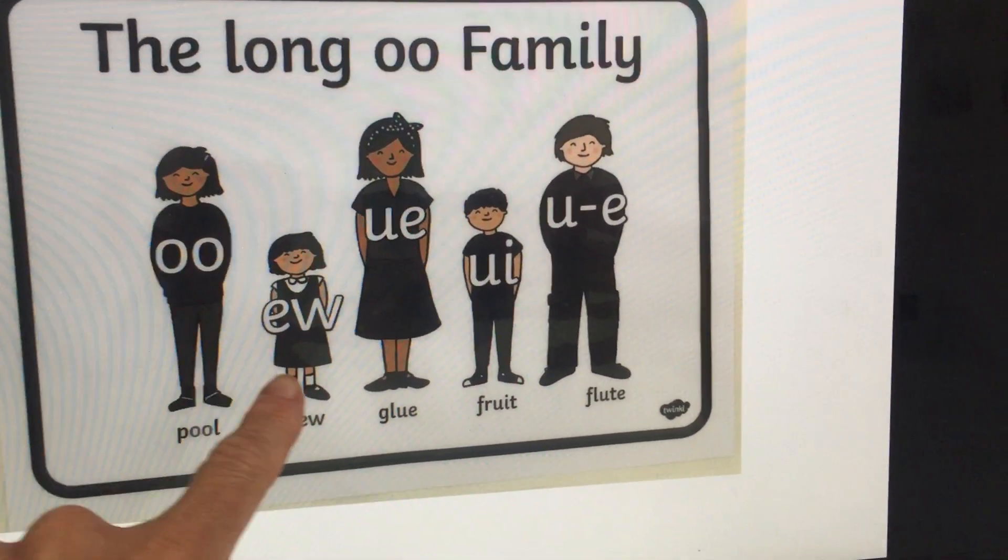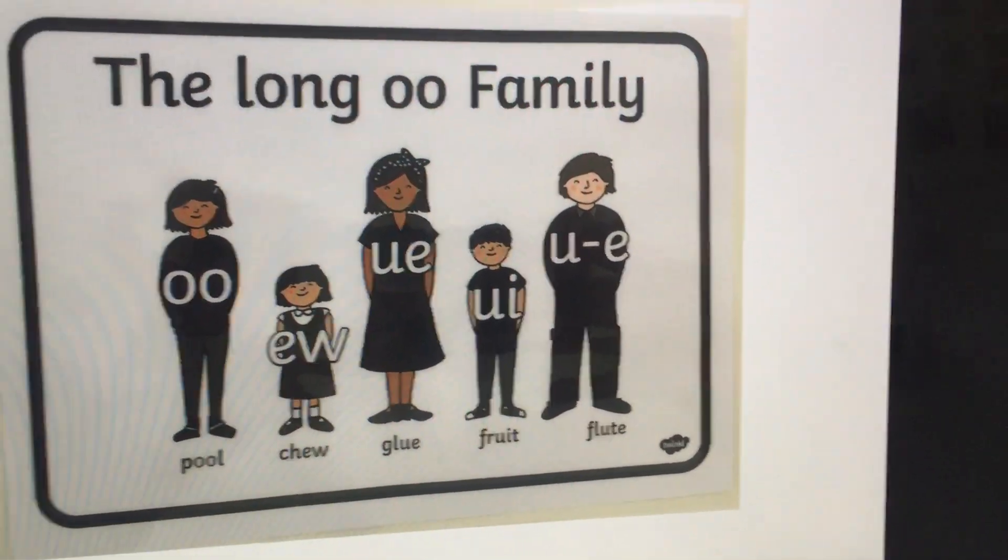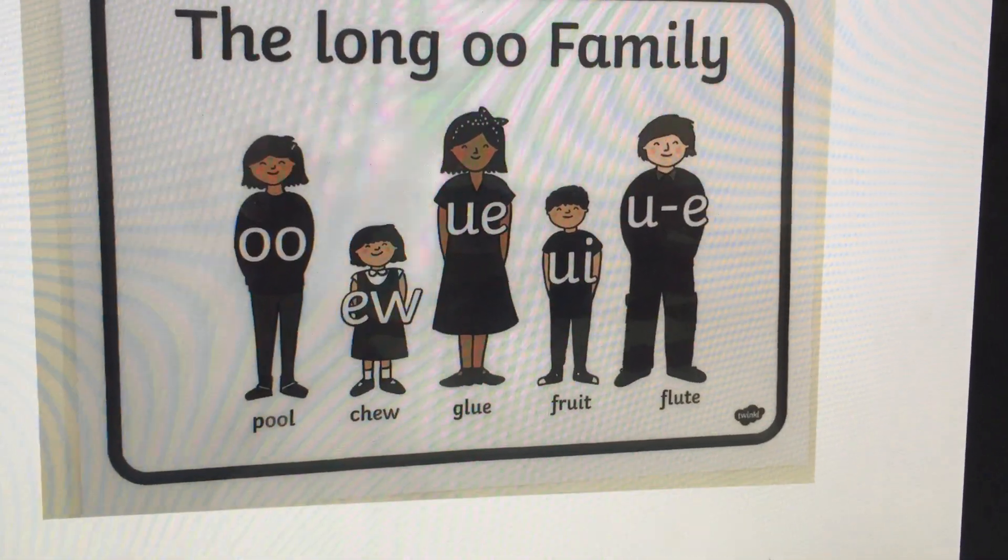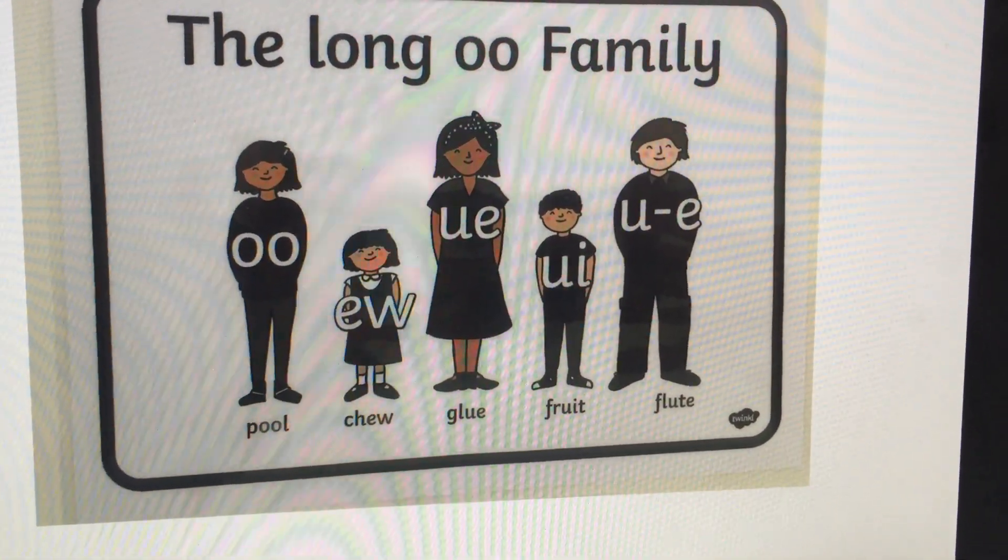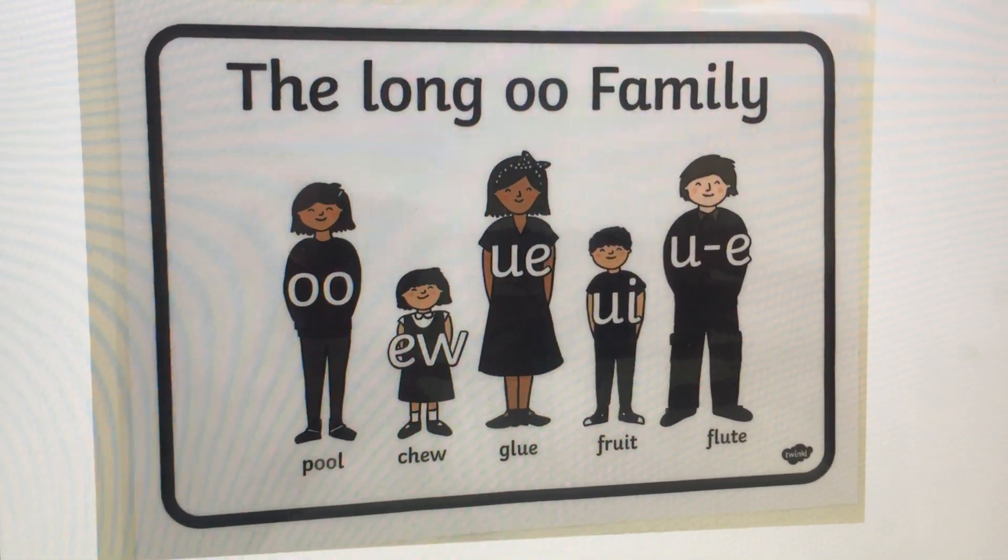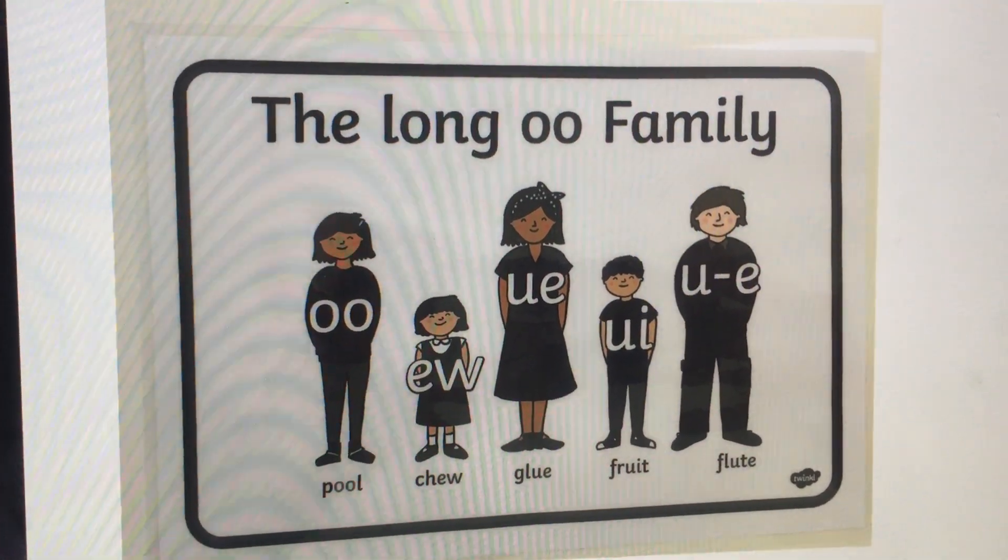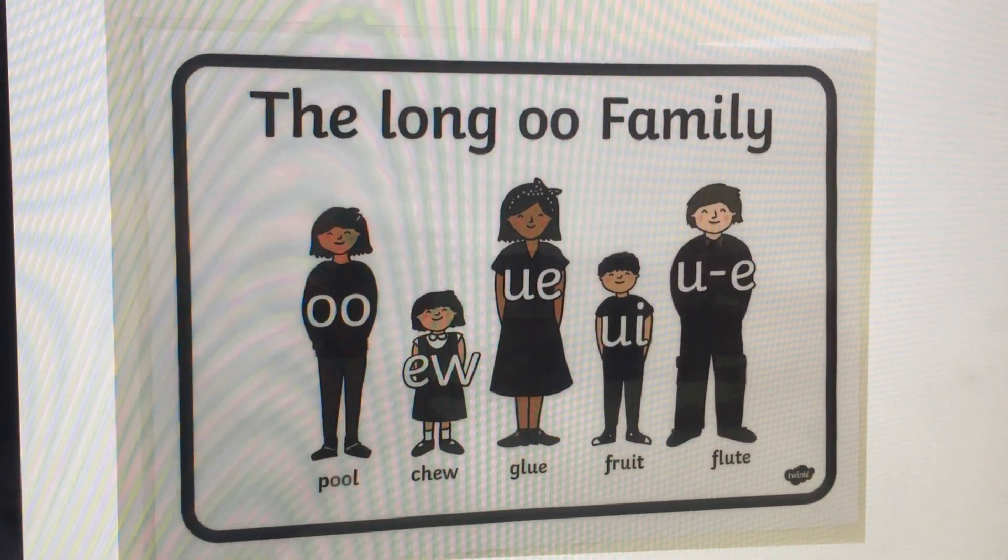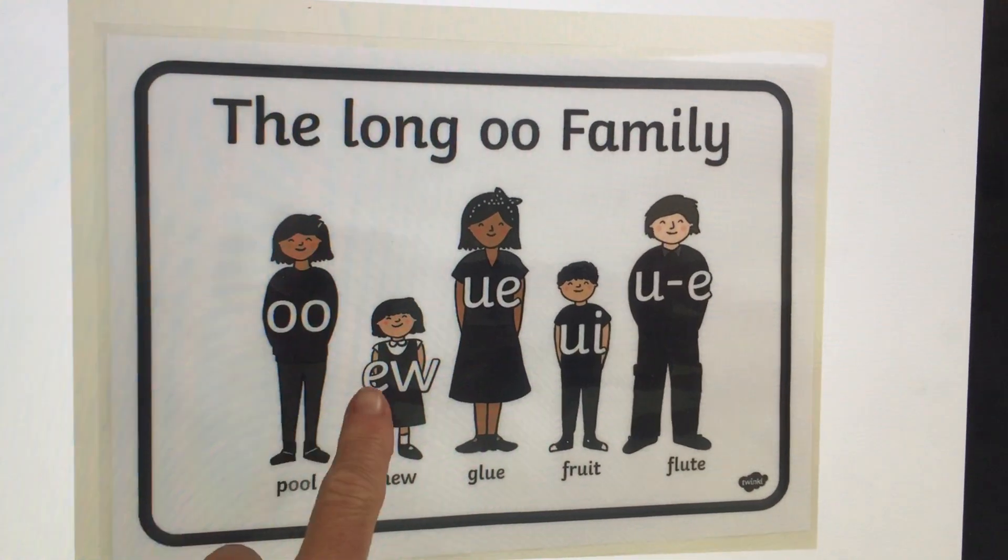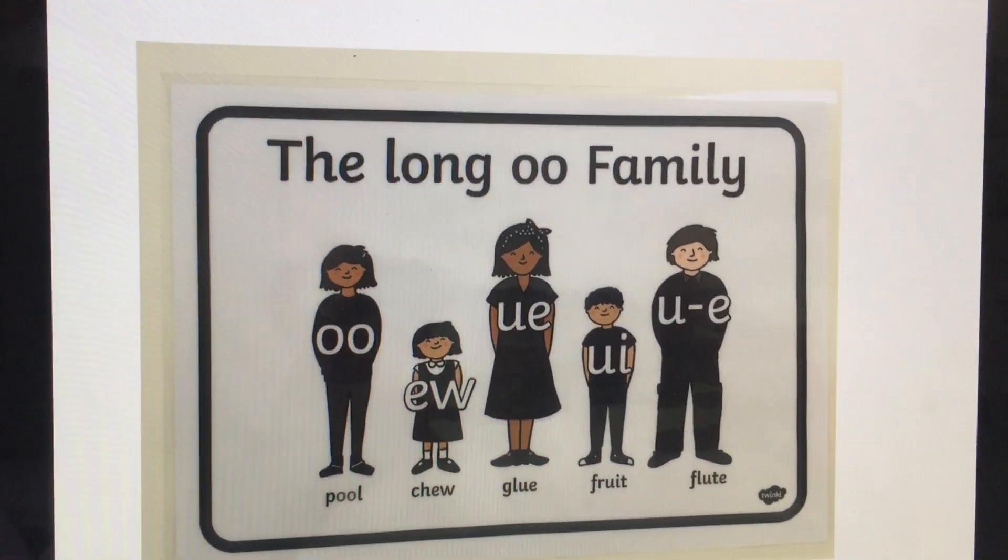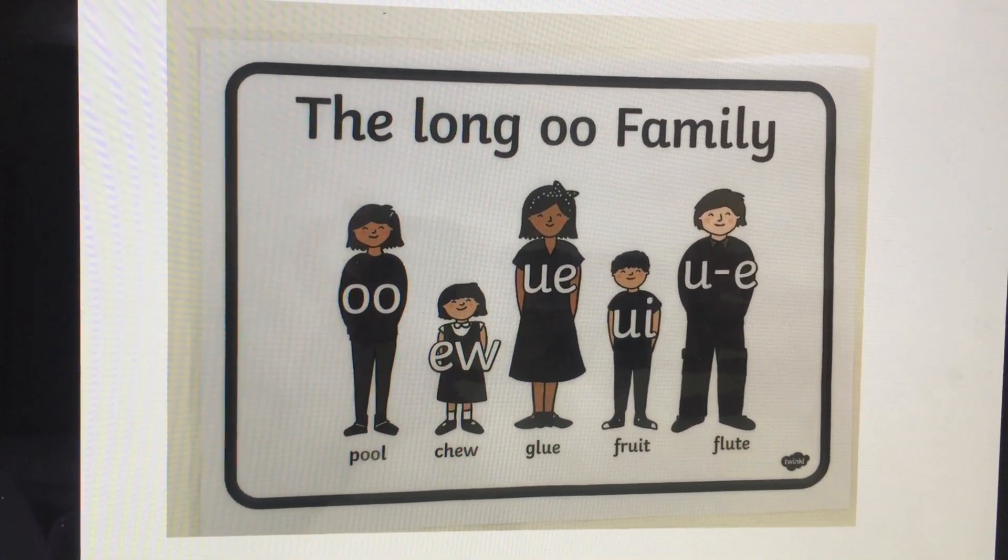We've got oo as in pool, oo as in chew, oo as in glue, oo as in fruit, and oo as in flute. So they're all making the same long oo sound, but as you can see, there are five different ways of spelling. This is when our phonics gets a little complicated.